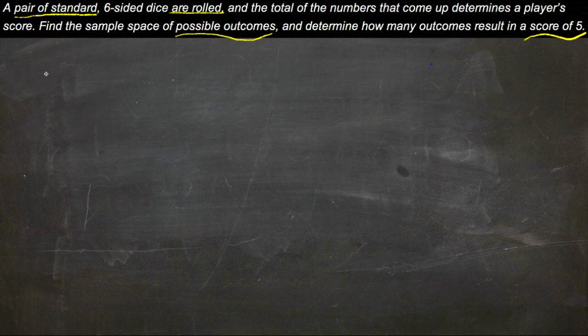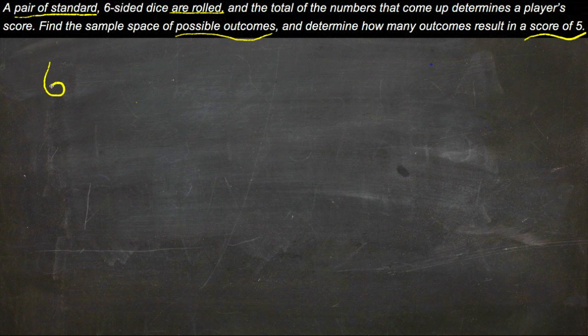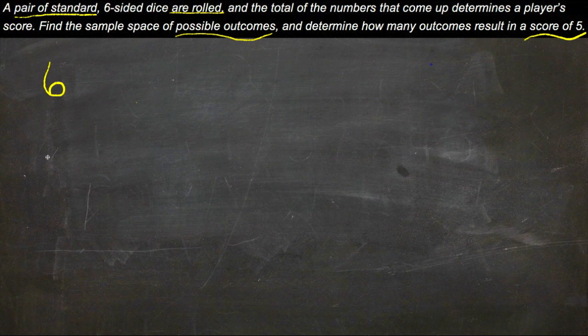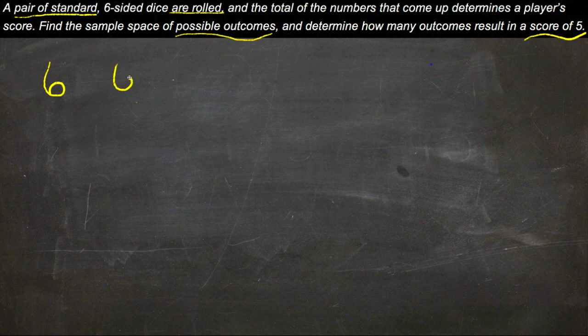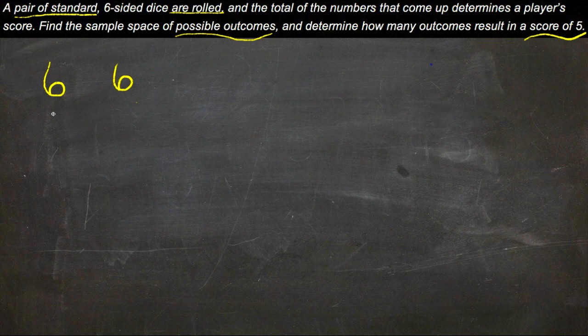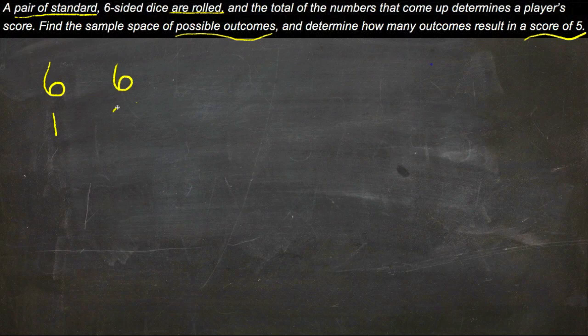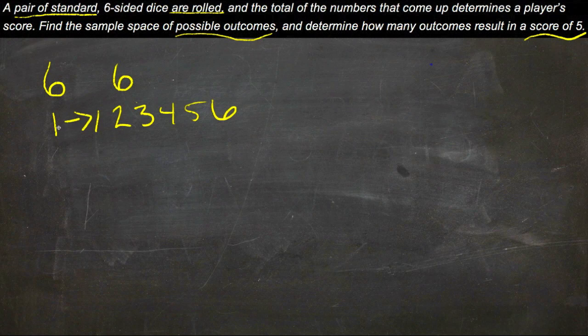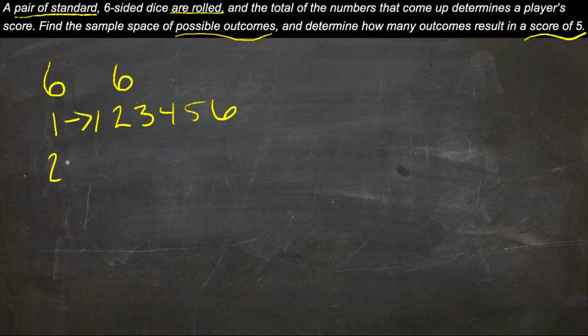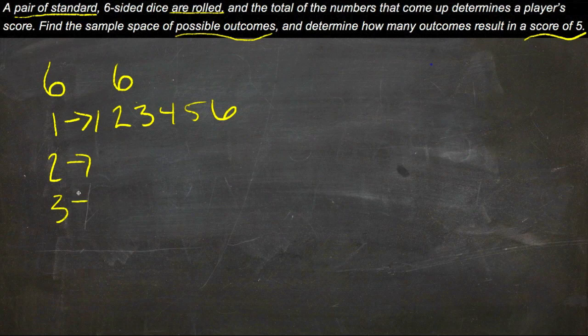With one die, if it has six sides, then there's six possibilities for different rolls with that first die. With the second die, it also has six sides, which means that for each of the possibilities on the first die, we could roll a one or a two or a three or a four or five or a six. So we have six possibilities for each number on the first die.